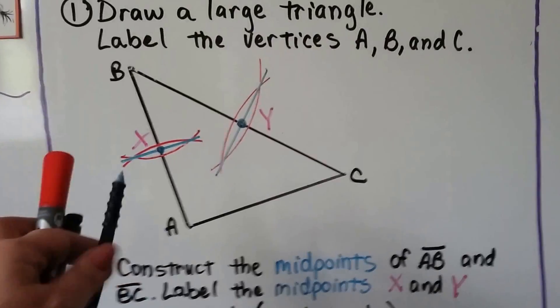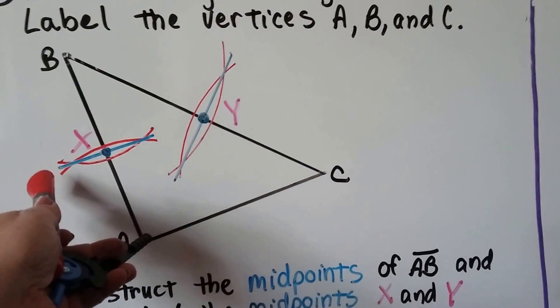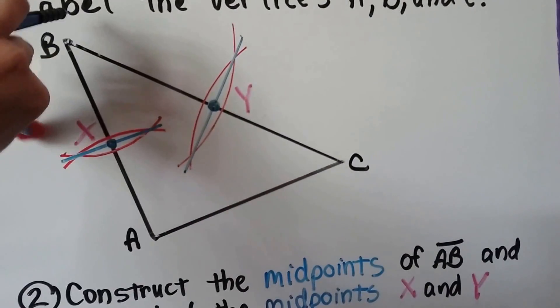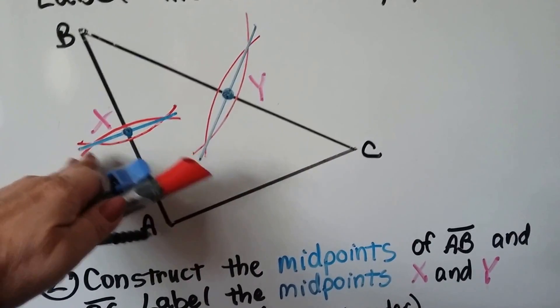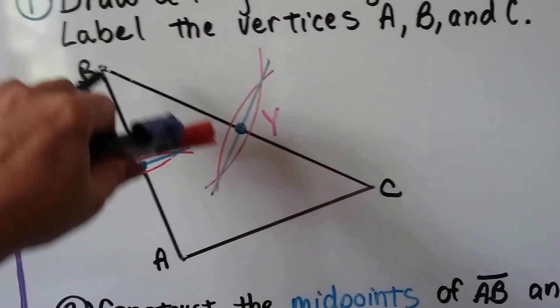If you remember how to do that, we take our trusty compass, we put it on A, we make an arc, we keep it the same measure, and we put an arc with the point on B, and we draw a line from the intersection of the arc to the intersection of the arc and where it meets on AB is the midpoint. We do the same thing for BC.